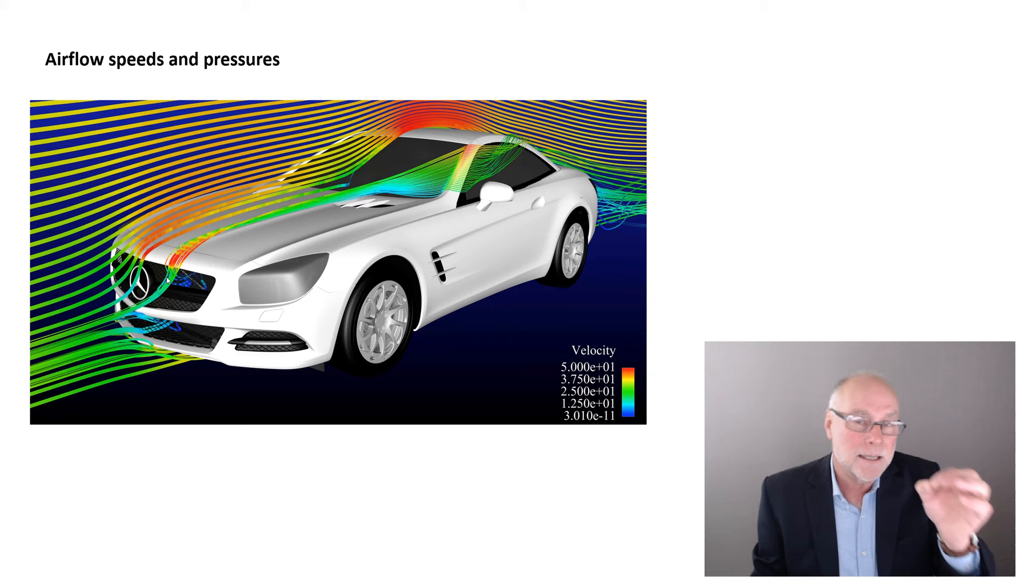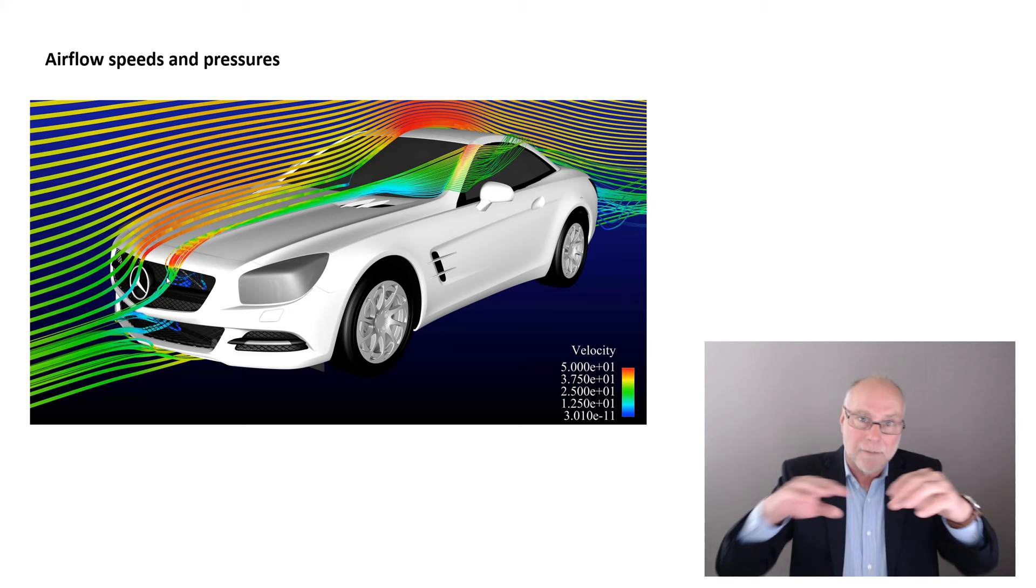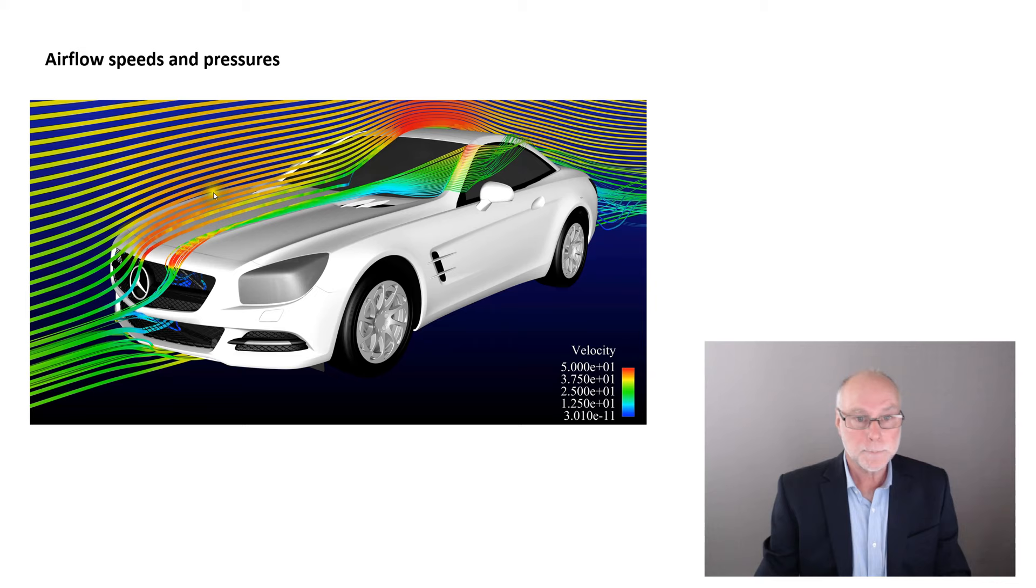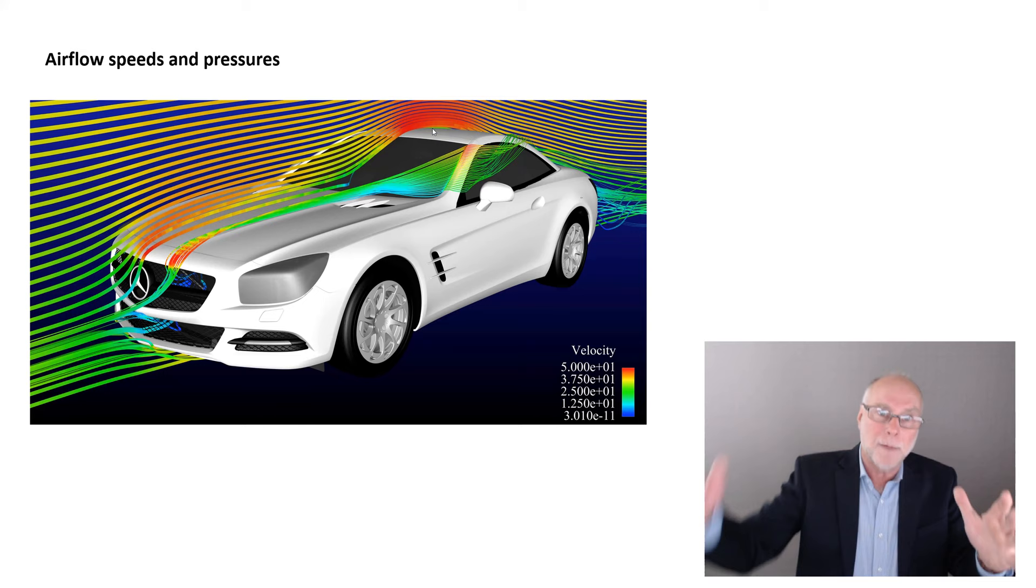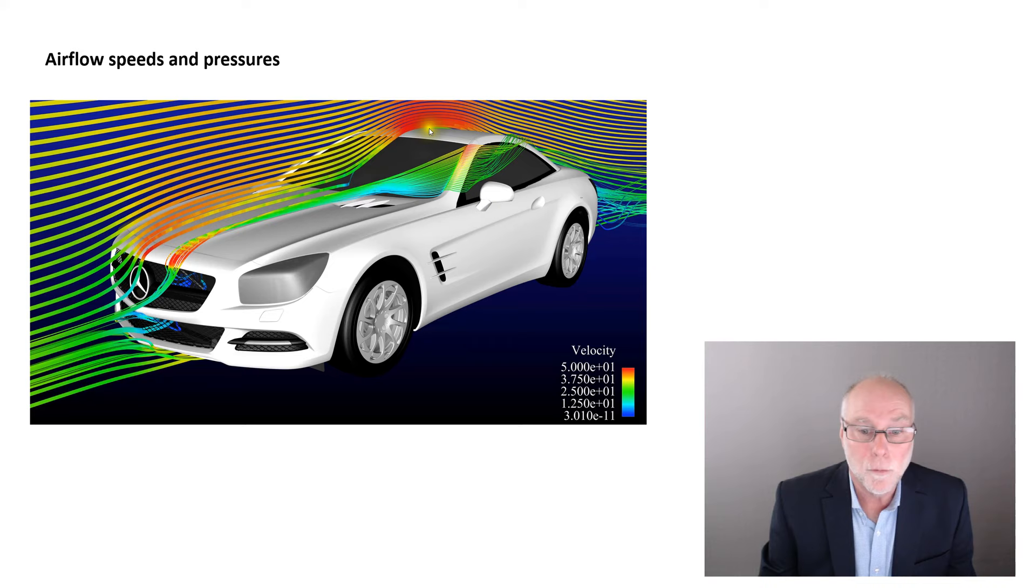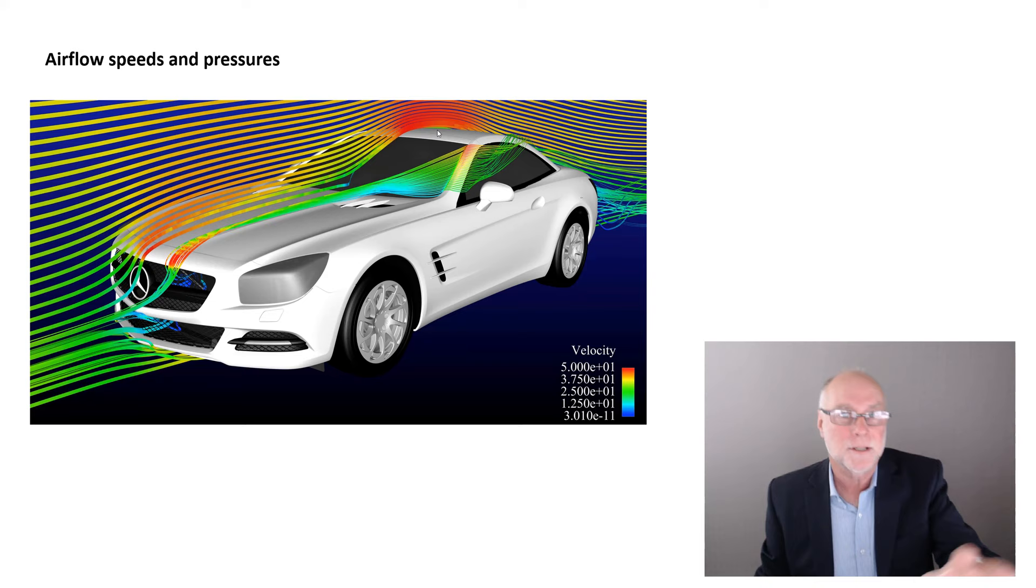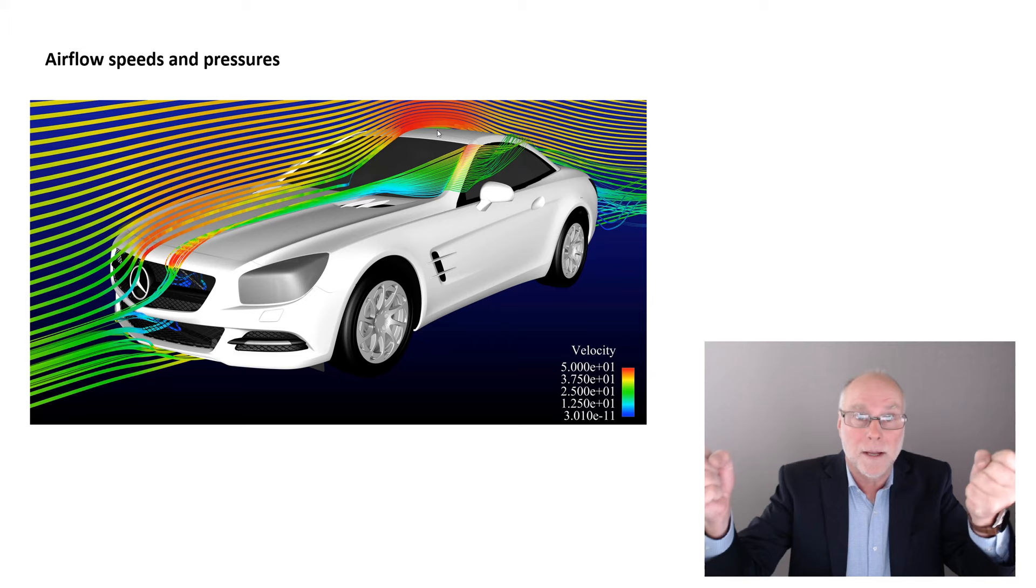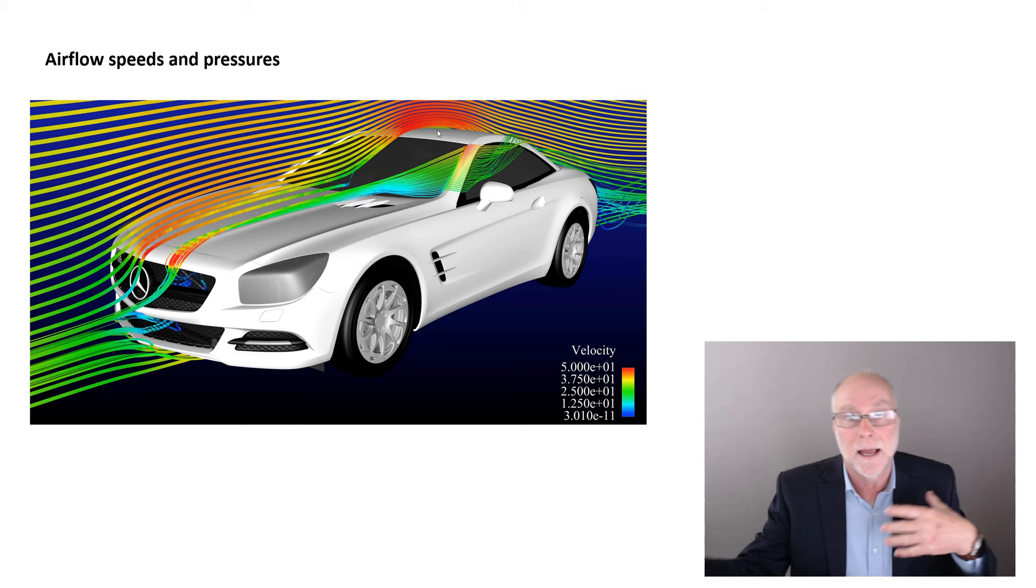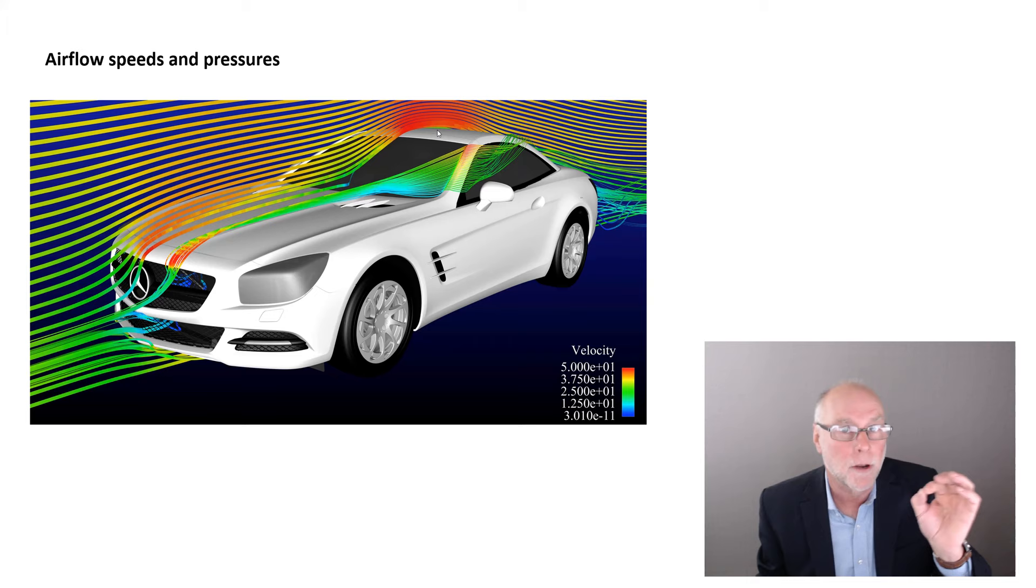Now, the faster the air is going, the lower the pressure that acts on the bodywork. So, we can see at the very front of the bonnet or hood, there is typically a low pressure acting there. But look at what's happening over the top of the roof. We saw a moment ago the airflow wrapping around the roof, and I said that was developing lift forces. If we look here, we can see all those pressures are really low. They must be low, because the airflow speed, velocity, is really, really fast.